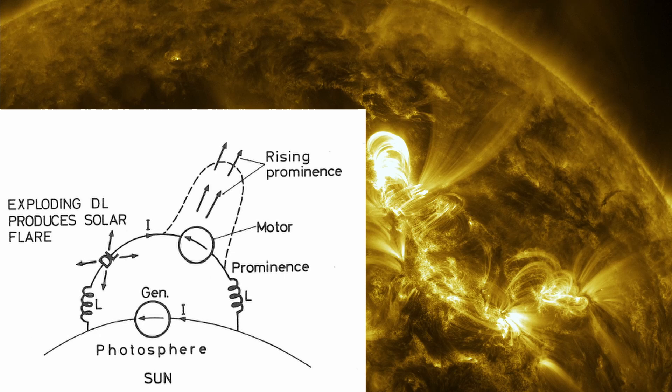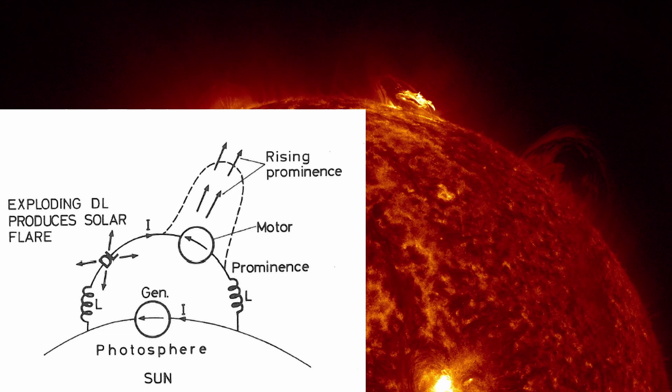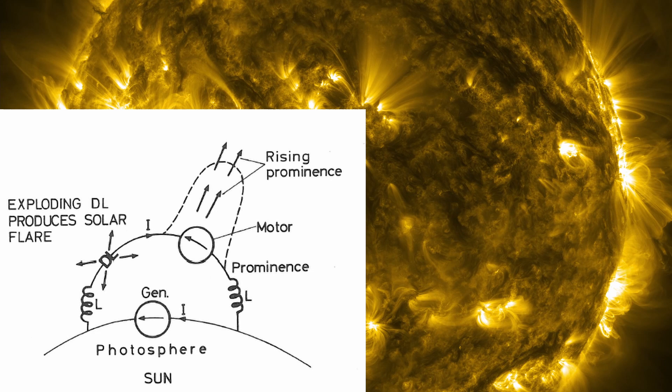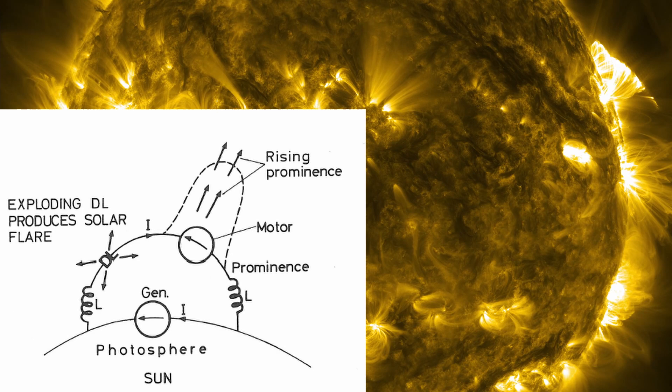When the current density surpasses a critical value, an exploding double layer is produced in which most of the circuit energy is released. This causes a solar flare. Under certain circumstances, the electromagnetic pressure in the current loop may produce a motor which gives rise to a rising prominence.